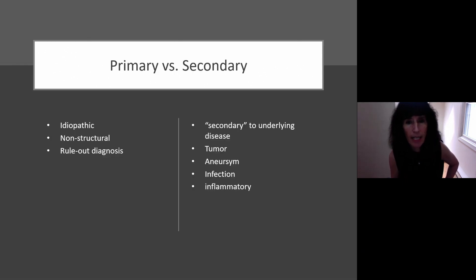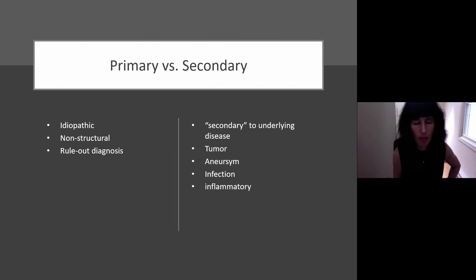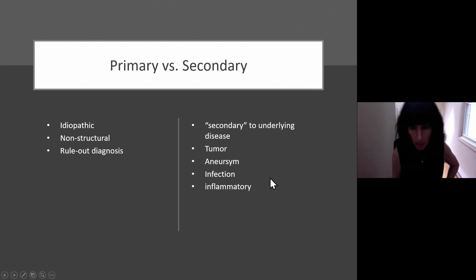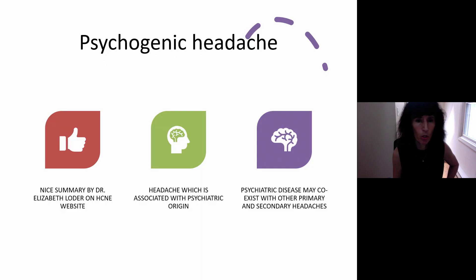We divide headaches up into primary headaches versus secondary headaches, with primary being idiopathic — they're not caused by something else, they're non-structural lesions, and they are a rule-out diagnosis. Before you feel comfortable making a diagnosis of migraine, you have to make sure that nothing else is going on. The secondary headaches are obviously secondary to some kind of underlying process: a tumor, an aneurysm, an infection, some kind of inflammatory condition.